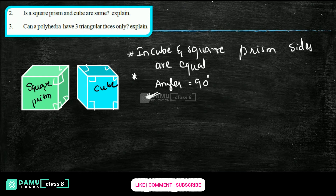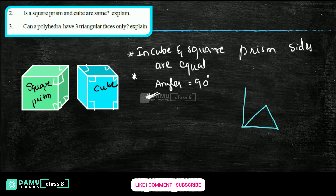The next question: can a polyhedron have only three triangular faces? Let's draw it out. This is one face, then another face — let's draw like this. So how many faces are required here?